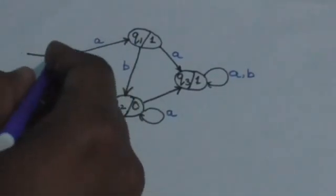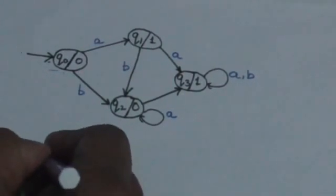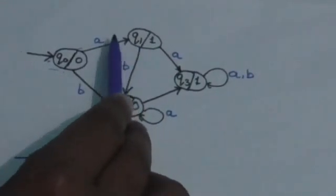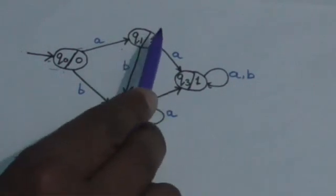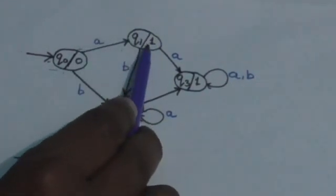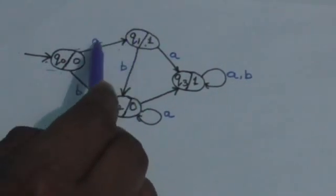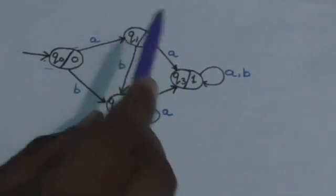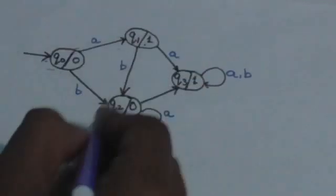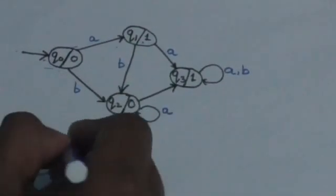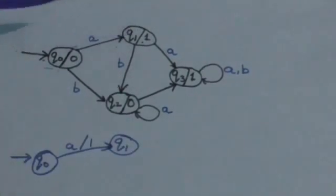So we will remove the output symbol from Q0. Now look at state Q1 — it has an incoming edge labeled by input symbol A. The output symbol associated with Q1 will be removed from the state and labeled on the transition, that is on its incoming edge to this state. So I have removed it from here and labeled it on the transition.